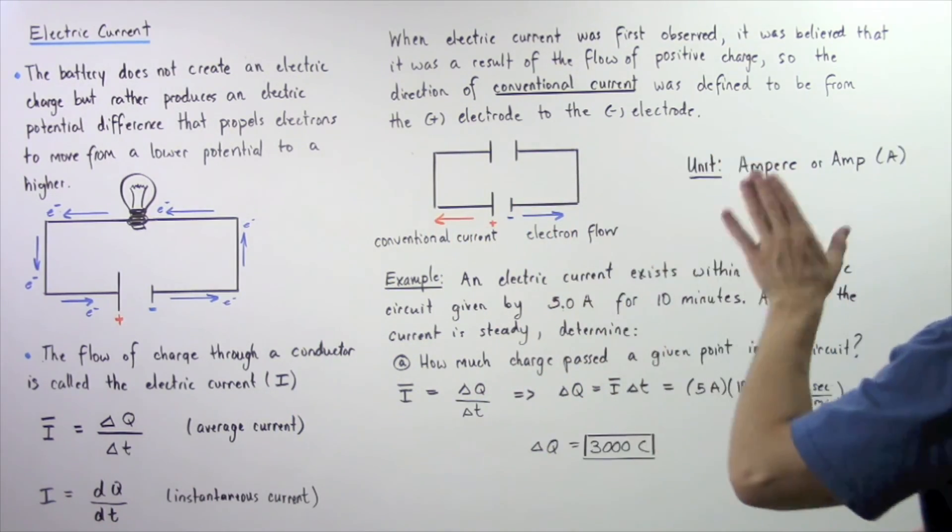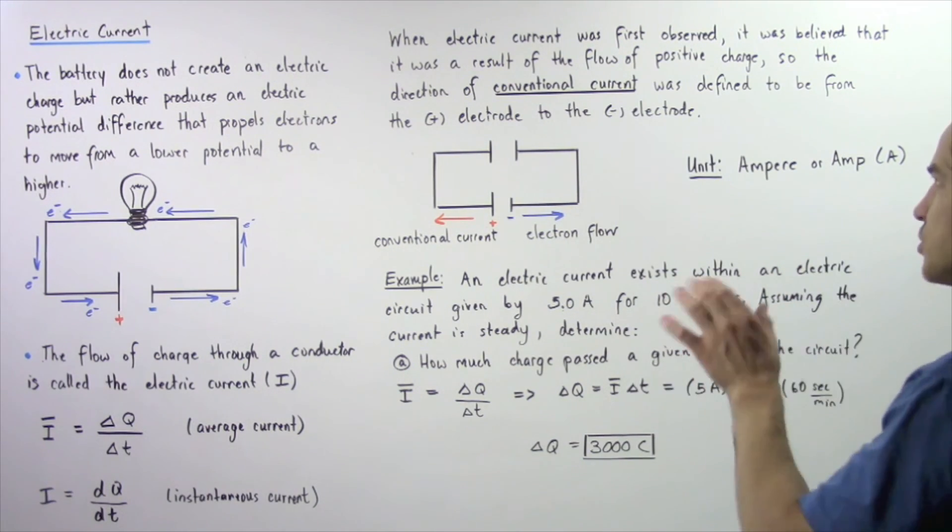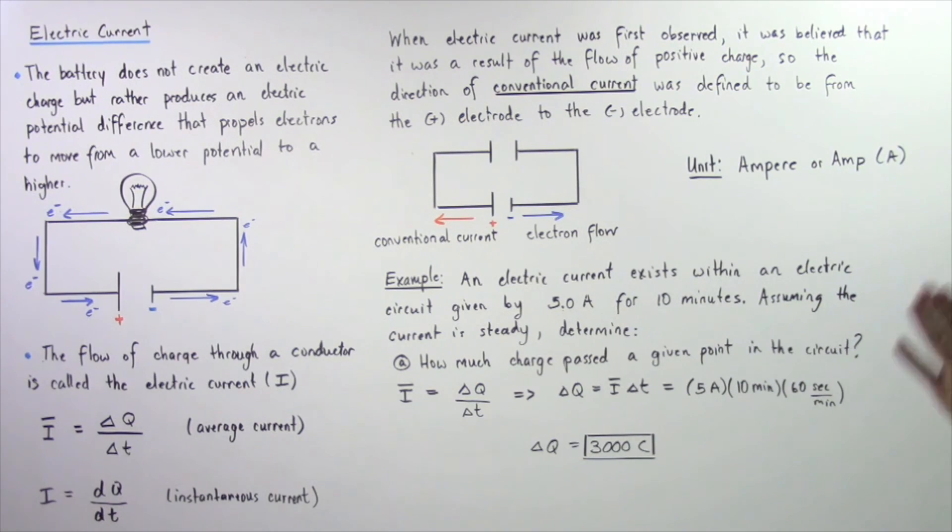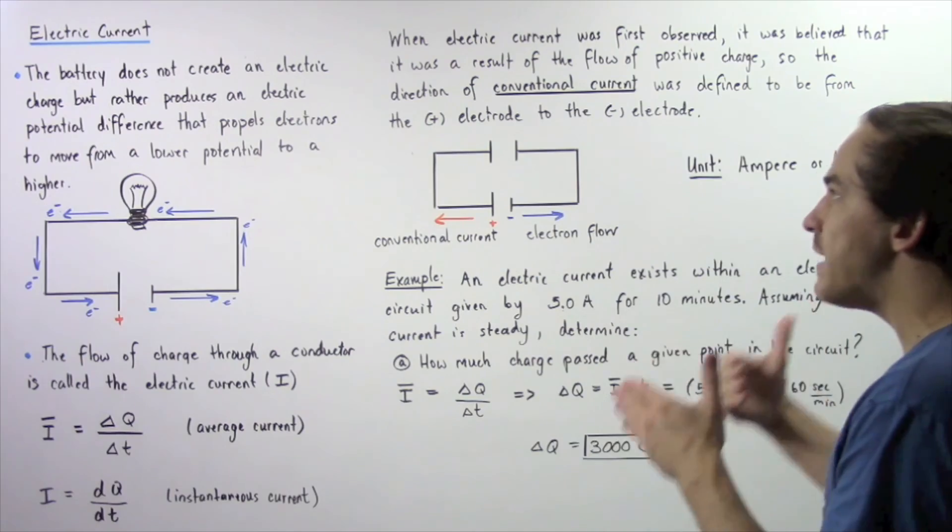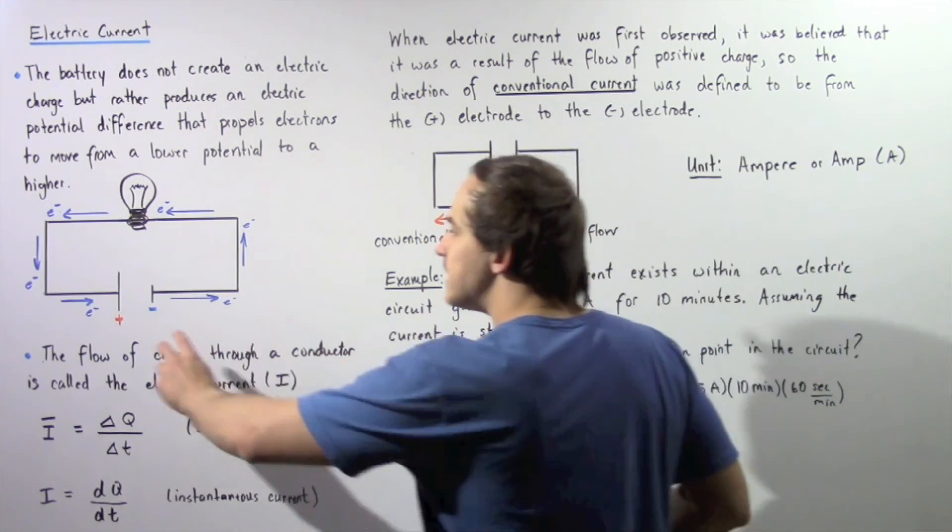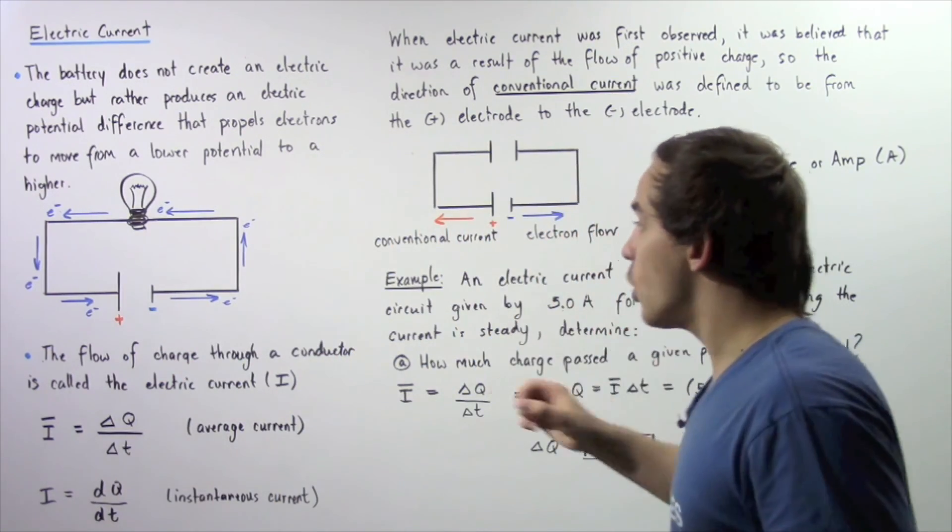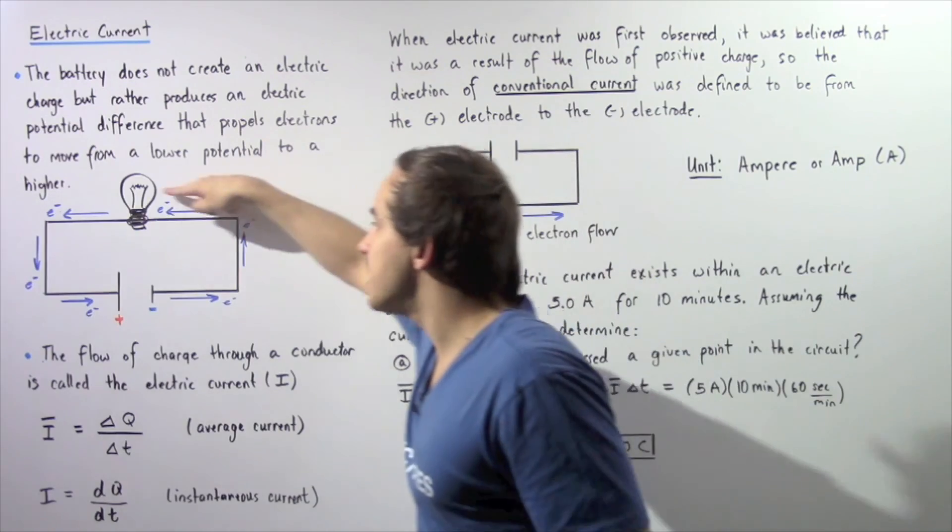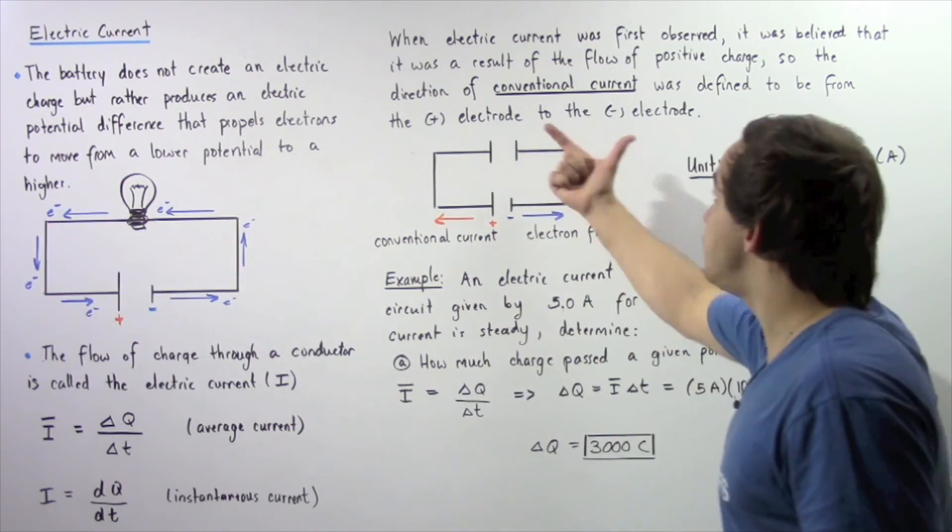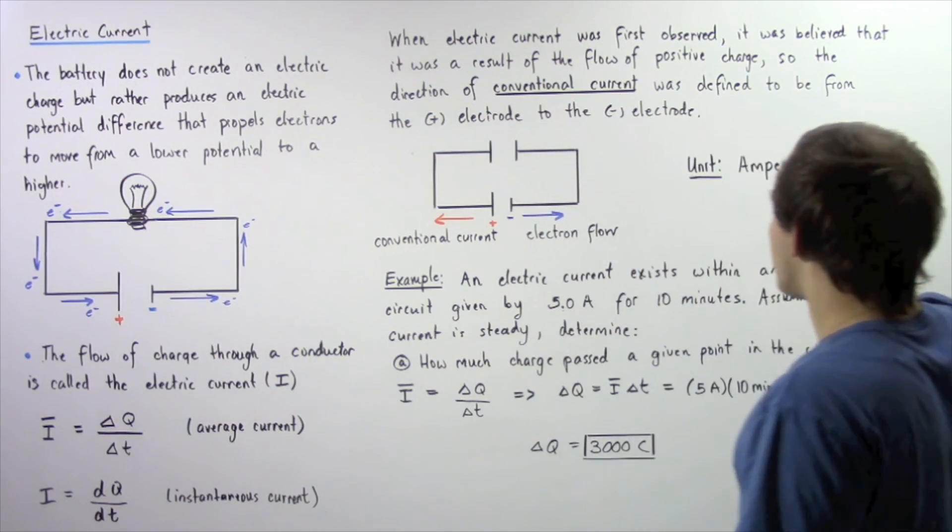Now when electric current was first observed, it was believed that it was a result of the flow of positive electric charge. So the direction of the conventional current was chosen to be beginning at our positive side and ending at the negative side. So even though electrons travel in this direction, our conventional current is defined to travel in the opposite direction.